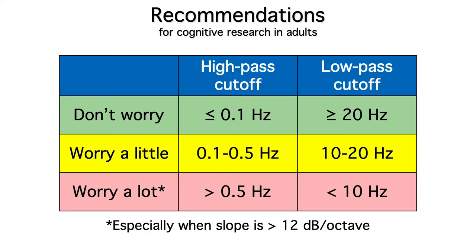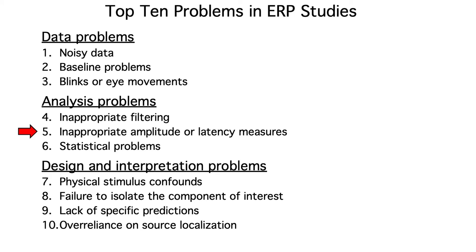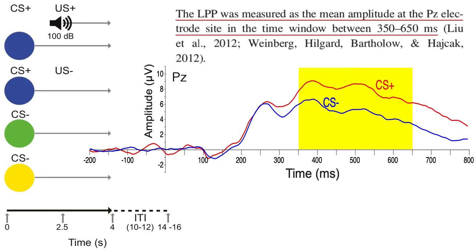Here are my concrete guidelines for when you should and shouldn't worry about the filter settings in an ERP paper. Now let's move on to inappropriate amplitude or latency measures. If you remember back to Felix's aversive conditioning study, he measured the late positive potential as the mean amplitude between 350 and 650 milliseconds. He literally took the voltage at each time point in this range and averaged those voltages together. That's a very common way of quantifying the amplitude of an ERP component.